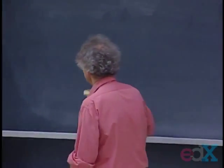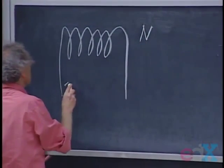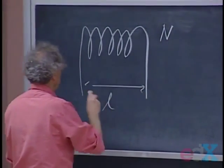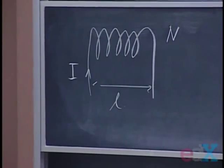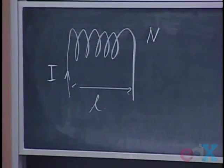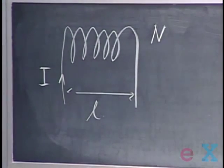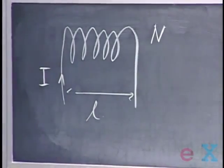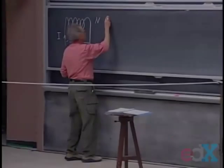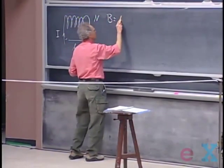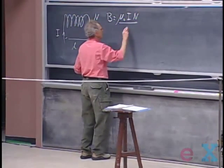Suppose we have a solenoid with N windings, length L, and current I flowing through it. The magnetic field generated by that solenoid — which I've called the vacuum field — can be derived using Ampere's law. That magnetic field is approximately mu-zero times I times N divided by L.